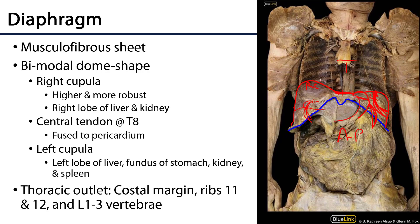The diaphragm is the major muscle of respiration. Its contraction increases the volume of the thoracic cavity, thereby decreasing pressure and allowing air to flow into the lungs. It's able to do so because its attachment is all along the thoracic outlet. The thoracic inlet is the space between the first ribs, the manubrium, and the first thoracic vertebra. The thoracic outlet lines the division between the thoracic and abdominal pelvic cavities, including the costal margin, the lateral margins of ribs 11 and 12, and the crura of the diaphragm, which extend down to the third lumbar vertebra.